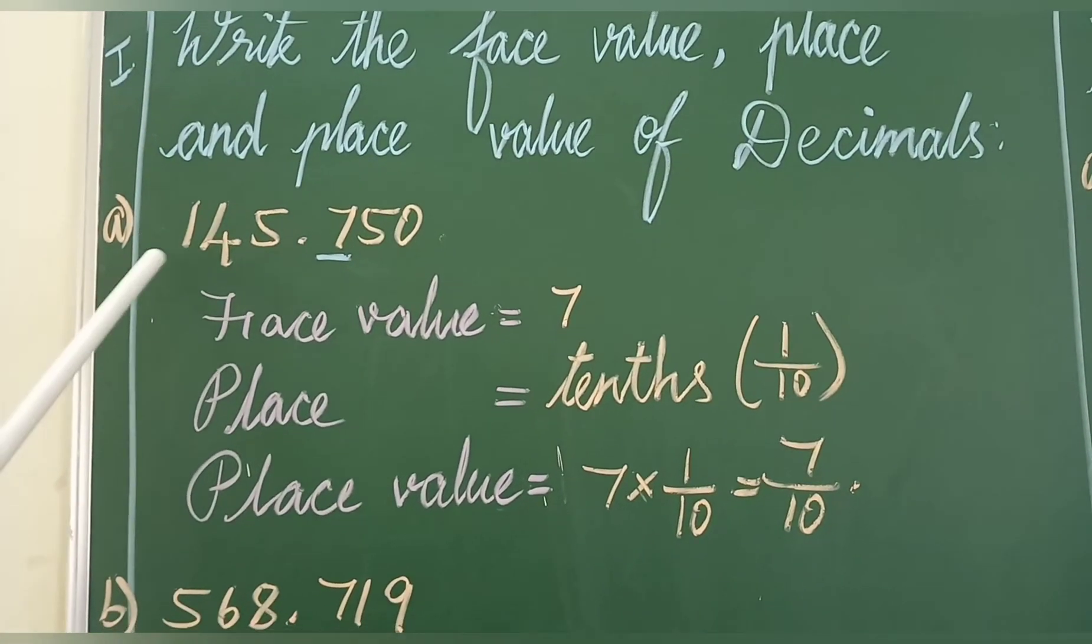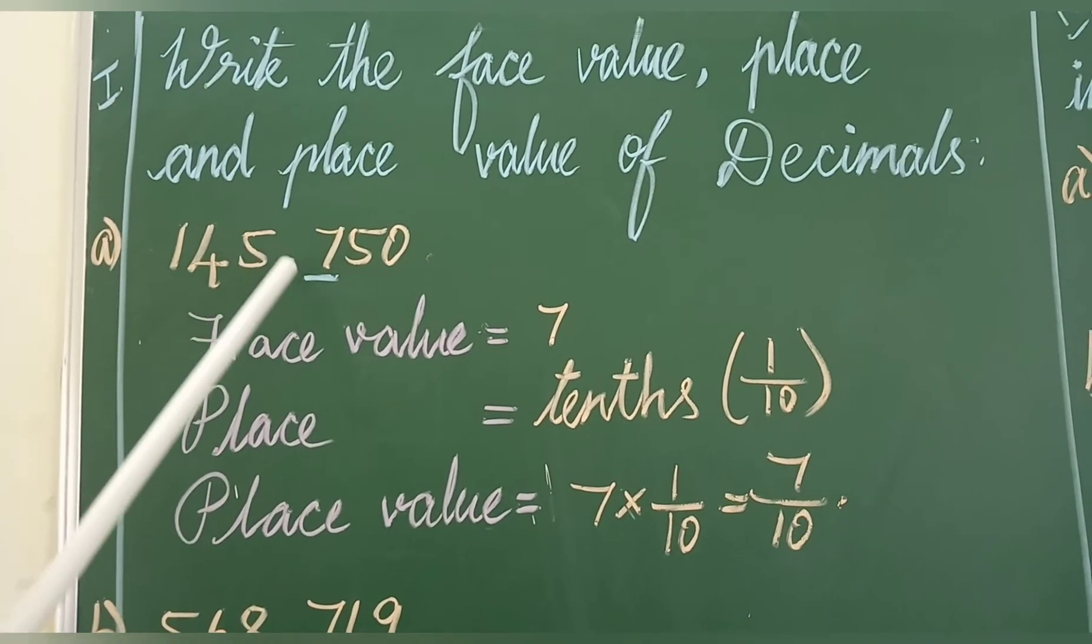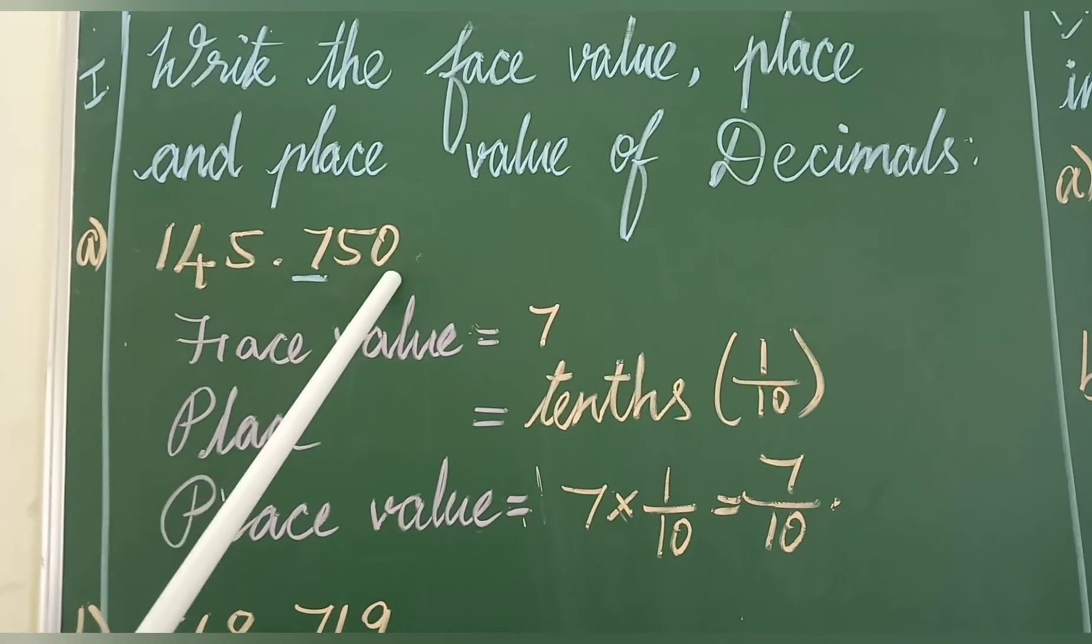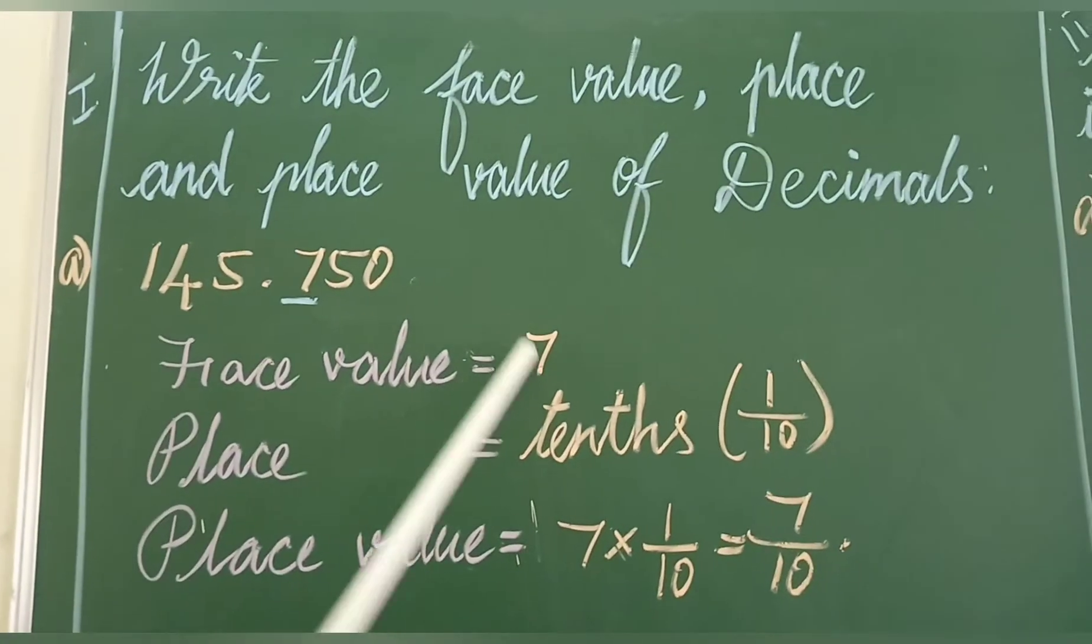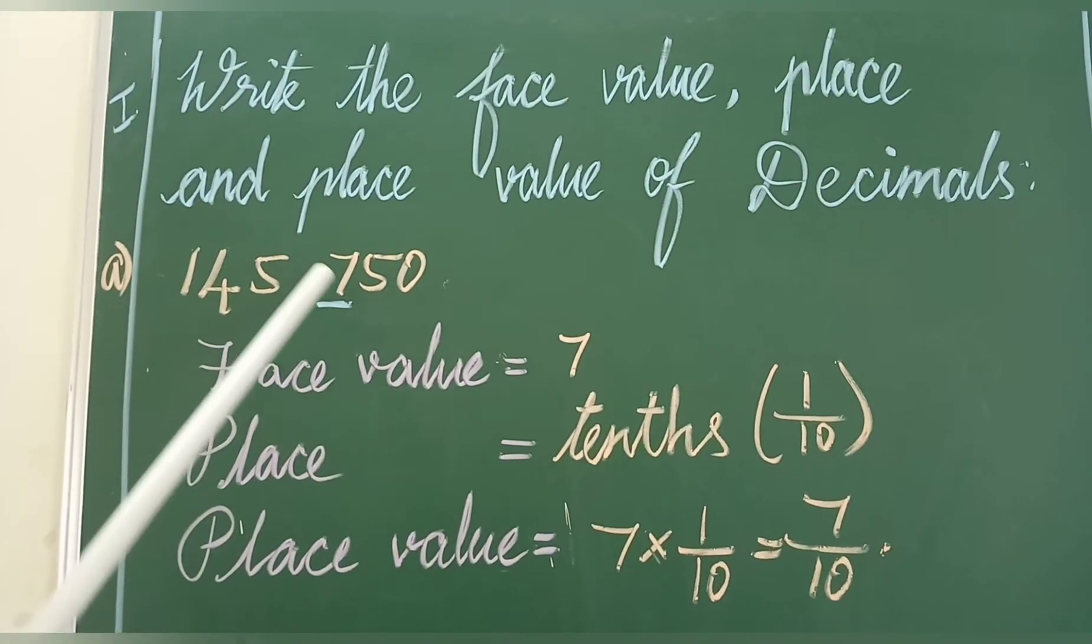Let's see this sum: 145.750. The face value of 7 is 7. The place is tenths (1 by 10).